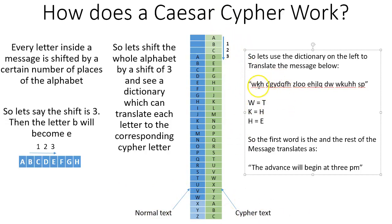So here we go. What does W, K, H mean? Here we have it. W in ciphertext means T, K means H, and H means E, the. The first word is the. And if we do this for every single letter in this message, we are going to get something quite meaningful. The advance will begin at 3 p.m.